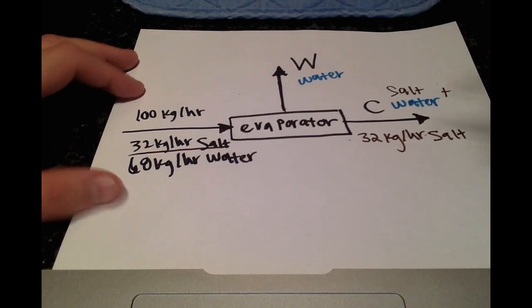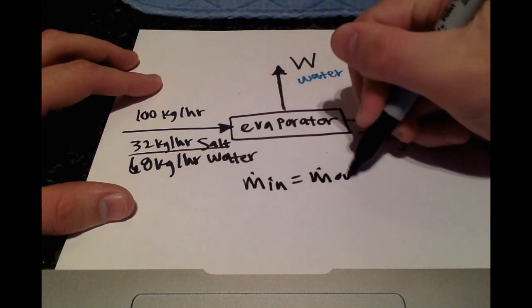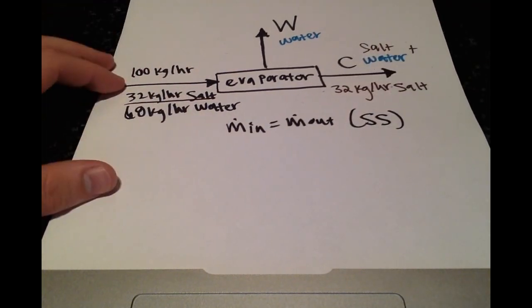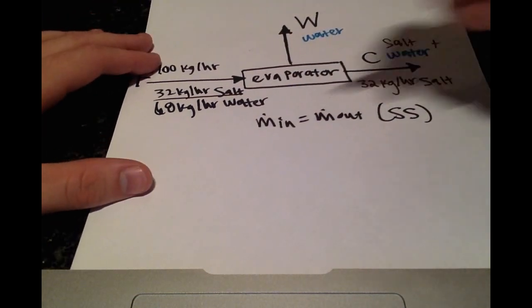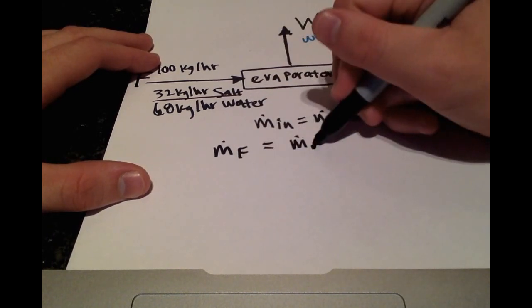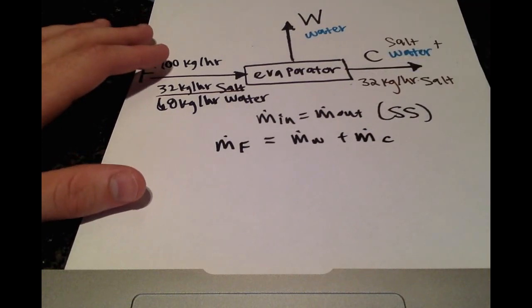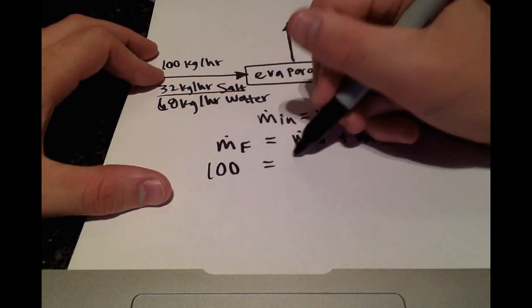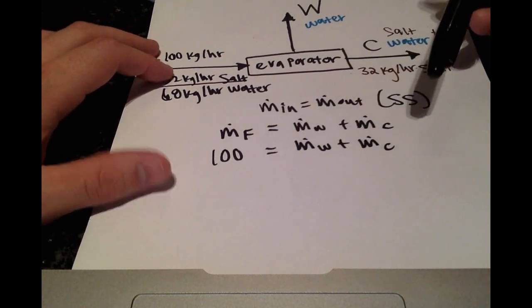Okay, and if we just write an overall balance, we know that the mass coming in has to equal the mass coming out, right? Because this is a steady state problem. So if we use the subscripts for each of our streams, we'll have the mass flow rate of the feed equals the mass flow rate of the water vapor plus the mass flow rate of the concentrated solution. And the only value we have so far is the 100 kilograms per hour. So we need to find one of these and then we'll be able to find the other.